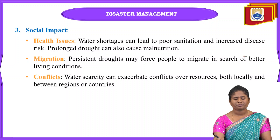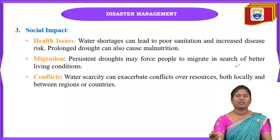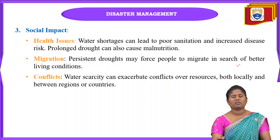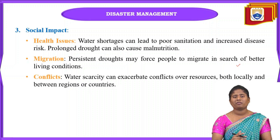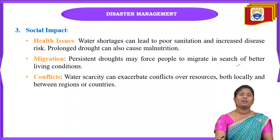The social impact of droughts includes health issues — shortage of water leads to poor sanitation, different types of diseases, and malnutrition. Migration is another effect: when sufficient water is not available locally, people must migrate to other places. Conflicts also arise due to water scarcity, with disputes over resources occurring both locally and across communities.